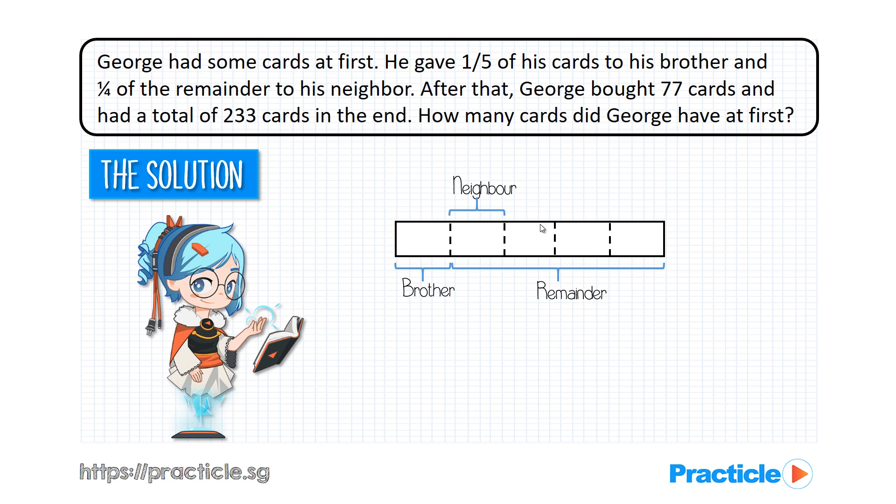Alright, after George gave his cards to his brother and his neighbour, there must be some amount of cards left. Correct? So, we label that in our diagram. So this is the portion that is left. Then what happens after that? He bought another 77 cards. Let's add that in.